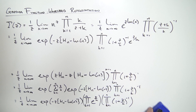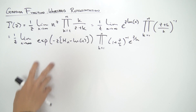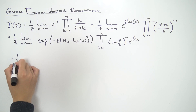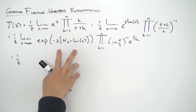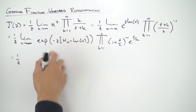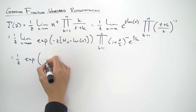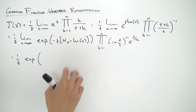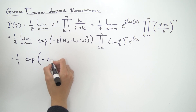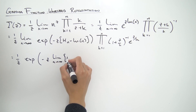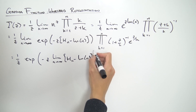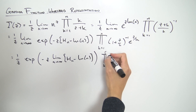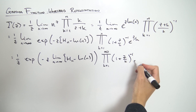Now we can apply the limit on everything — the limit of a product of two things is the limit of each thing. We apply the limit to the exponential: we can move the limit inside, drag z outside (it's independent of the limit), and get exp of minus z times the limit as n approaches infinity of (H_n minus natural log of n). Applying the limit on the product gives us the product from k equals 1 to infinity of (1 plus z over k) to the minus one times e to the z over k.